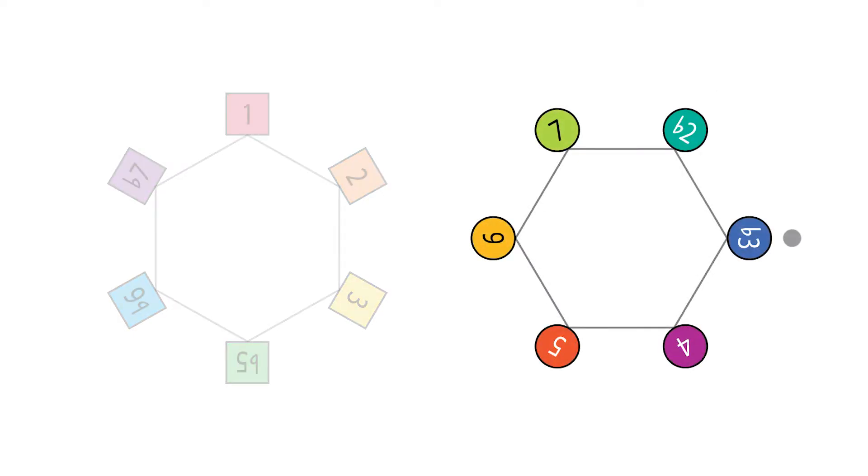And intervals b2, b3, 4, 5, 6, and 7, which are shown as circles. Both the colors and shapes correlate with the scale degrees.